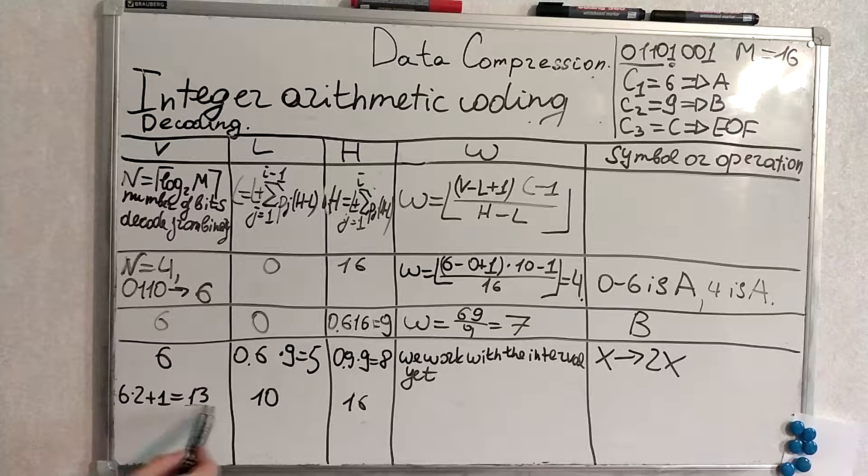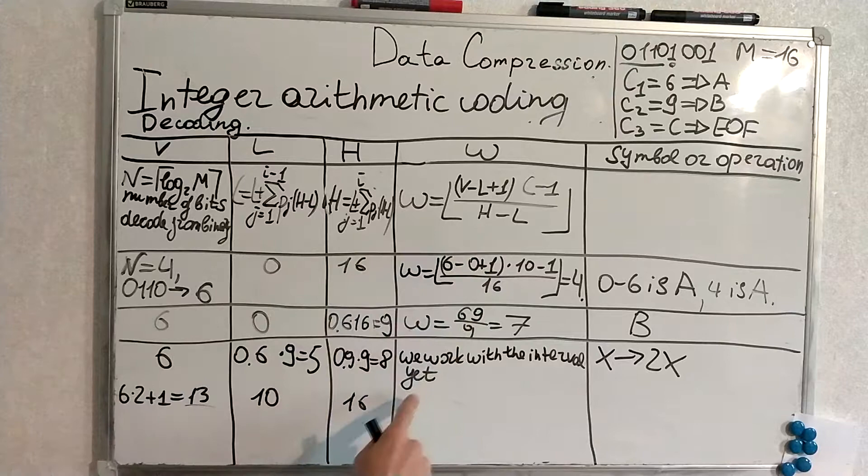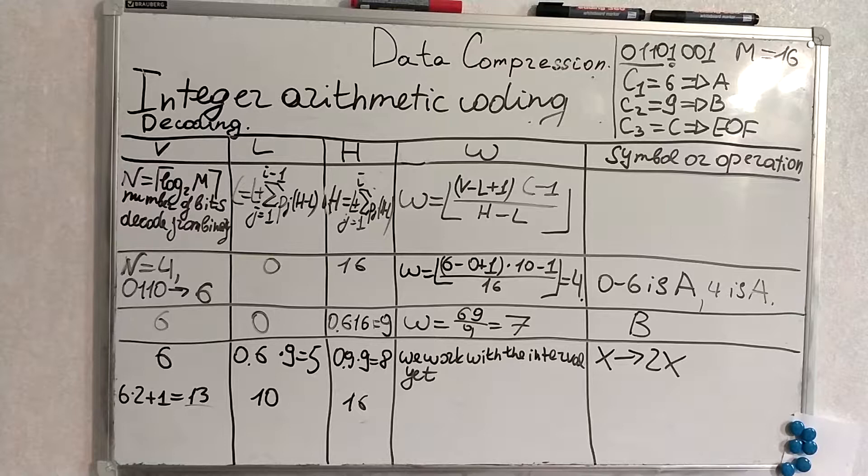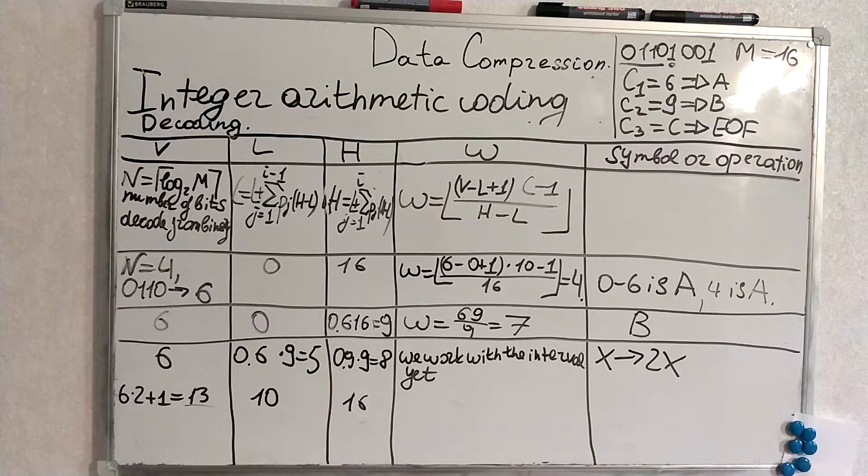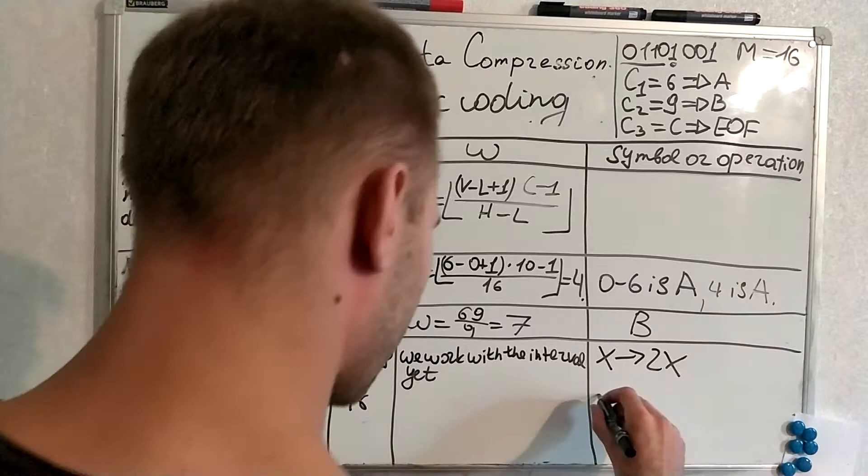Here here a new l is produced new h is produced according to the formulas from here. When we have rescaled our interval we didn't update we didn't do anything with w because we have worked with the interval and on our current step we have produced the numbers here after the rescaling and in such manner then they also have to be rescaled but in another way.